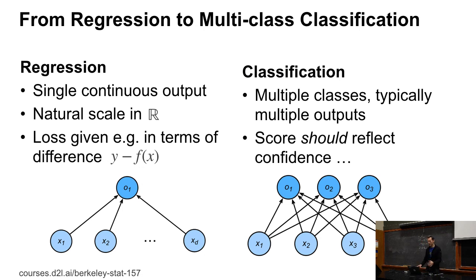So, to put that into perspective, in regression we have a natural scale, typically, in terms of the real value number. And then the loss is often given to us in terms of differences between y and f of x.